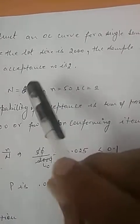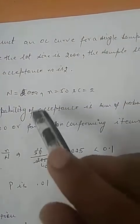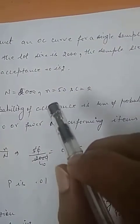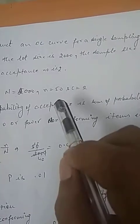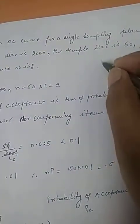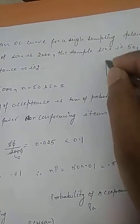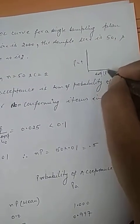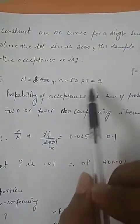From the previous lecture, we discussed a formula to calculate the probability of acceptance up to the acceptance number. Since the acceptance number is 2, we will count probability for zero, one, and two. Now we need to draw the OC curve, which plots probability of acceptance against proportion of defectives, denoted by p.